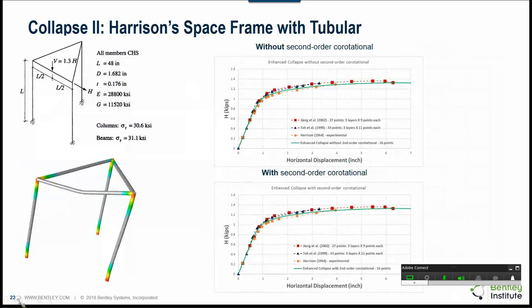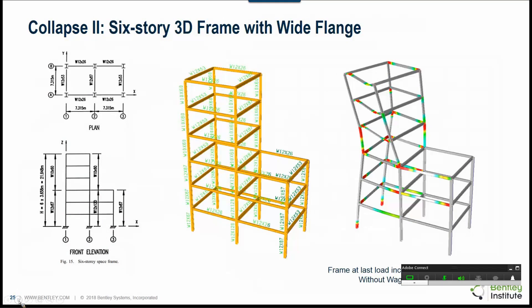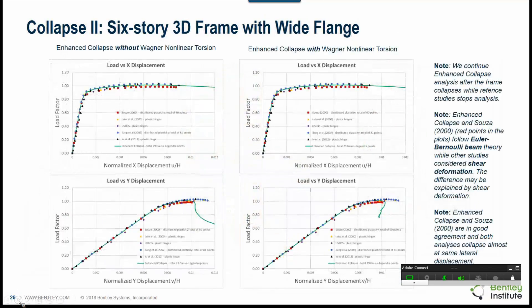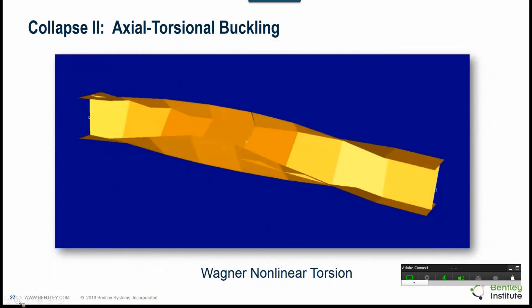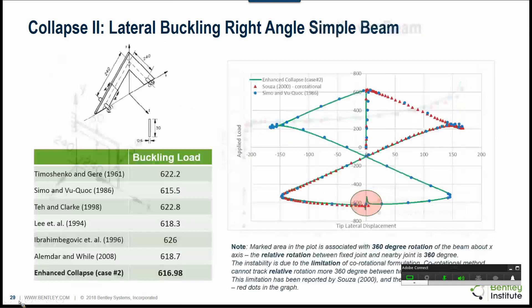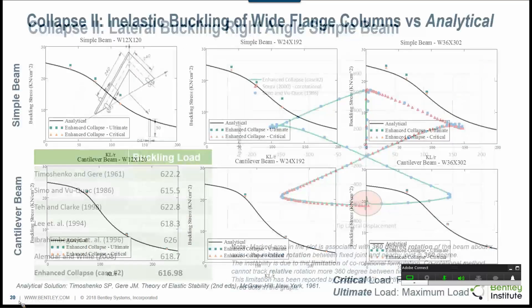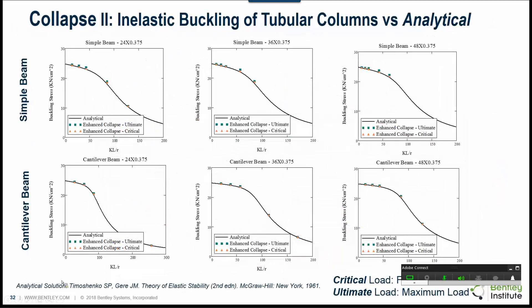And there are many of these solutions that are provided with the software and these are all included in the new manual. The comparisons are made against both analytical solutions and in addition to that we also have comparisons against design codes. These are the failure curves for design codes. Again, you see very good comparison between the new collapse and the existing results out there.